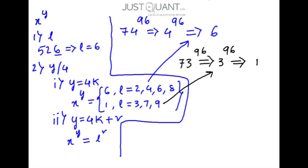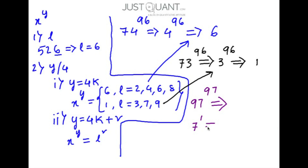Now considering the case where we calculate the unit digit of 97 to the power of 97, we see that y is not exactly divisible by 4. Dividing 97 by 4 gives a remainder of 1. So we write this as 7 to the power of 1, where 7 is the unit digit in x and 1 is the remainder upon dividing y by 4. So 7 to the power of 1 equals 7, meaning 97 to the power of 97 gives us 7 as the unit digit.